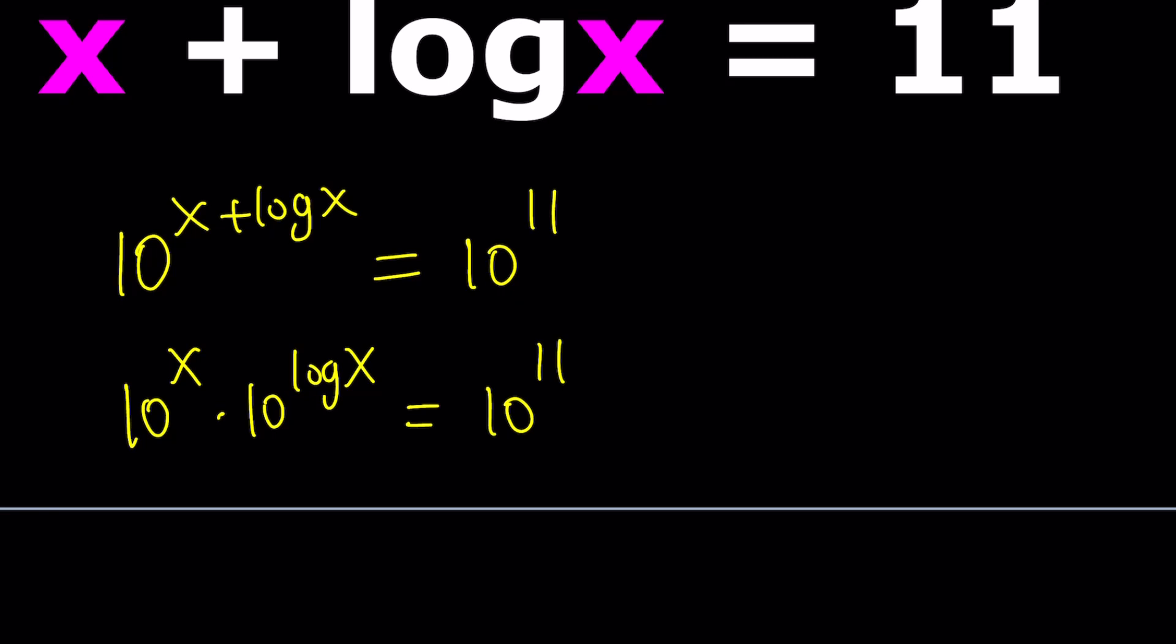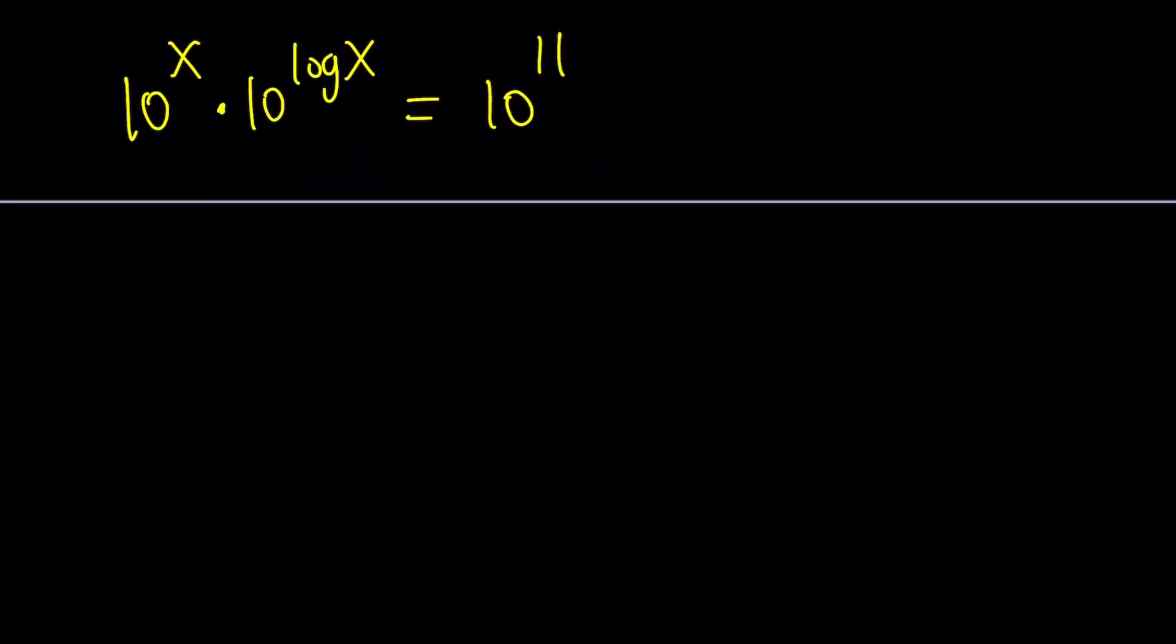One thing we need to do here is use some of the identities or properties of logarithms. For example, we can't really simplify 10 to the power x because that's what it is. But we can simplify 10 to the power log x because 10 to the power log x is actually, when written explicitly, it just means 10 to the power log x with base 10. So we have the same base. You know what that means? They cancel out because they're kind of like inverse operations.